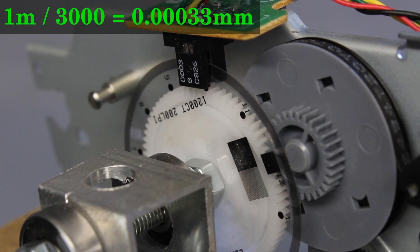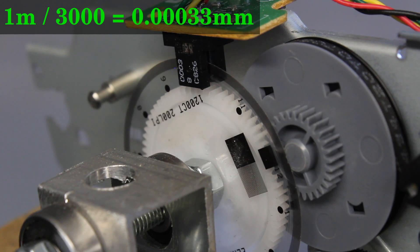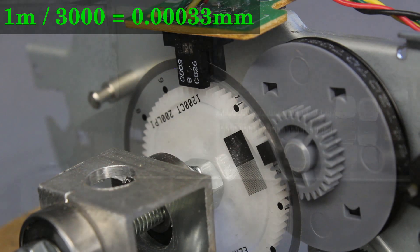With a given pitch of 1mm per turn, the thread transforms one step into a linear movement of 0.3 micrometers, at least in theory.